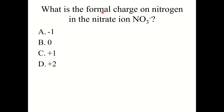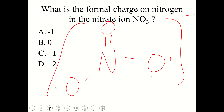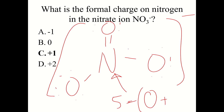Now let's try a practice question: what is the formal charge on nitrogen in the nitrate ion, NO3 minus? The correct answer is plus one. The Lewis structure for nitrate has nitrogen in the center with a negative one charge on the ion. Nitrogen by itself has five valence electrons. Nitrogen has no lone pair electrons and four bonding electrons from its bonds, giving a formal charge of five minus four equals plus one.